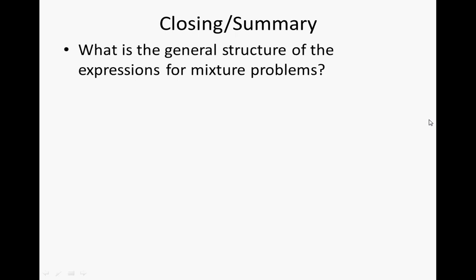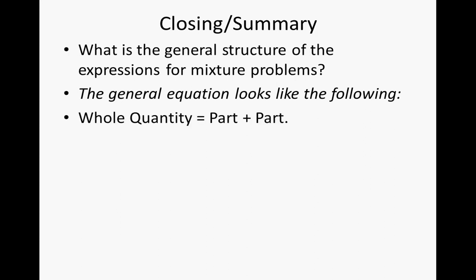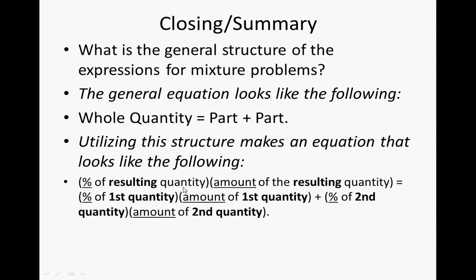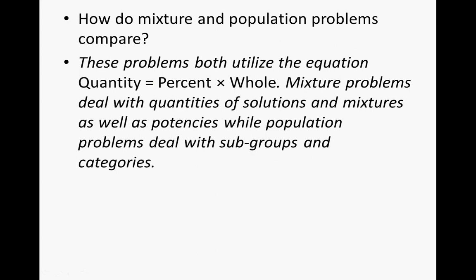To wrap up: the general structure of mixture problem equations is that the whole quantity equals the sum of its parts. Specifically, the percent of the resulting quantity times the amount of the resulting quantity equals the percent of the first quantity times the amount of the first quantity, plus the percent of the second quantity times the amount of the second quantity. Both mixture and population problems use the equation quantity equals percent times whole — mixture problems deal with quantities of solutions and potencies, while population problems deal with subgroups and categories. We'll see you in class!